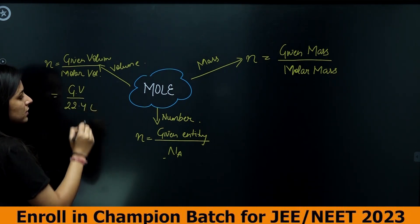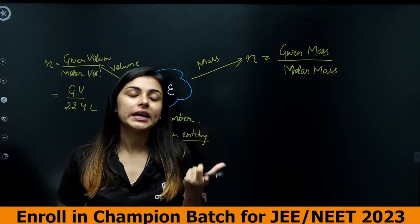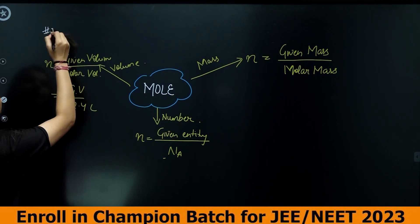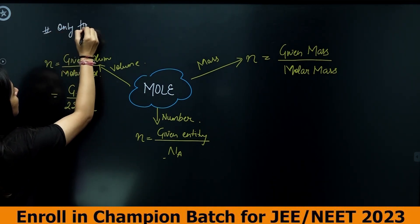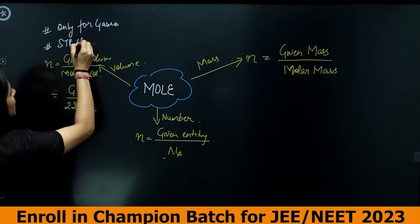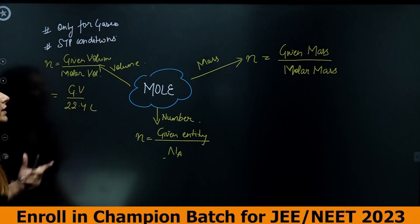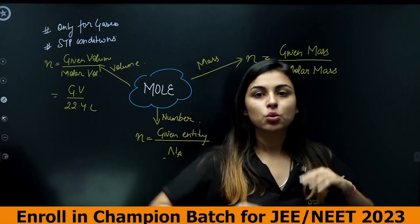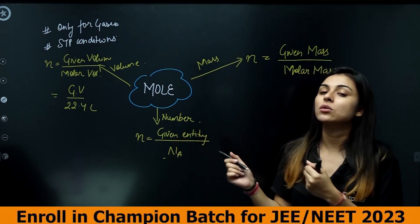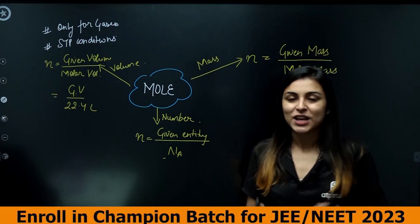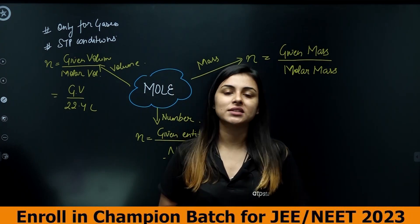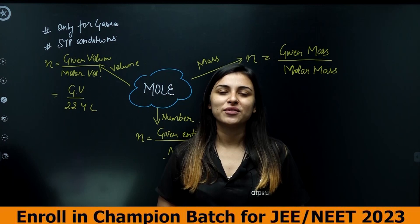(3) In terms of volume: number of moles = given volume ÷ 22.4 liters — only for gases, and only at STP conditions. If you know all three methods, the entire chapter becomes easy. Revise this well because in the next class we will do lots of practice. Thank you so much and all the very best!